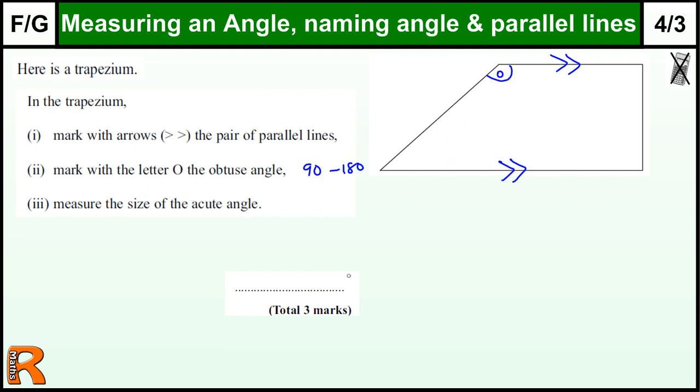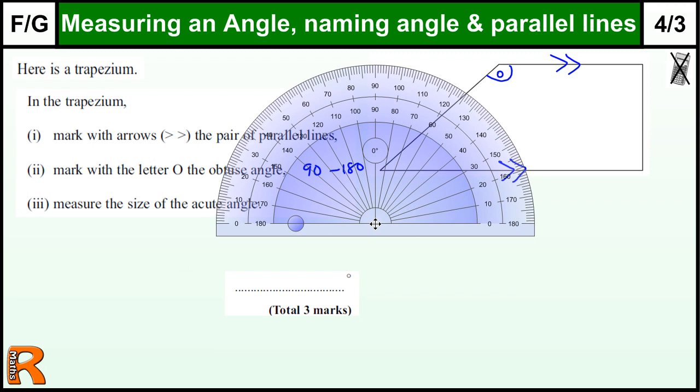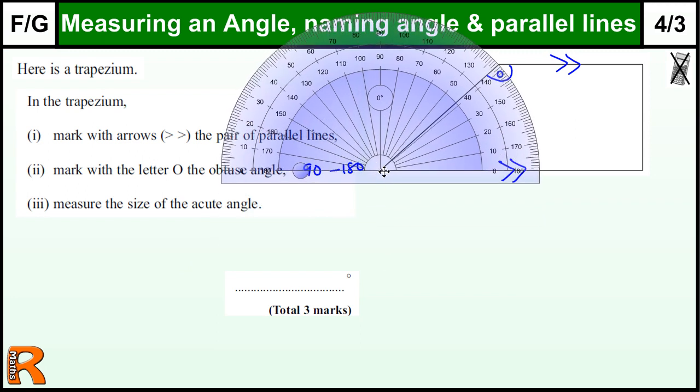Measure the size of the acute angle, so we need a protractor for that. So I've got one here. If I bring it in and place it so that the center of the protractor is on the point of the angle. The acute angle is the pointy angle. It's the one that's less than 90. So that's this one here. And then if we look along the protractor, we should get...